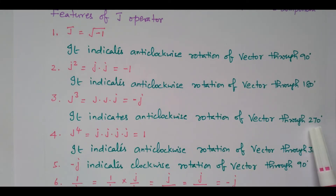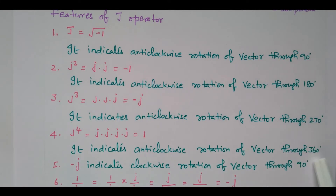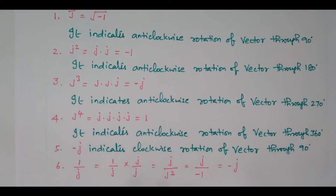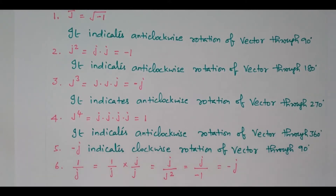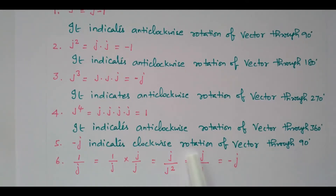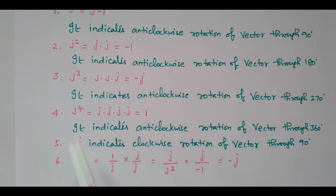So 90 degrees will keep increasing. J to the power 4 means it is 360 degrees. The J represents 90 degrees; J squared, J cubed mean keep on increasing by 90 degrees. This minus J indicates clockwise rotation of 90 degrees. So far we discussed only plus J, J squared, J cubed. J means anti-clockwise; minus J means clockwise rotation.